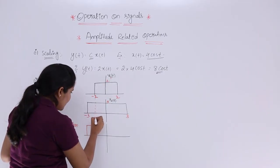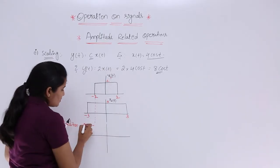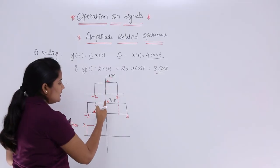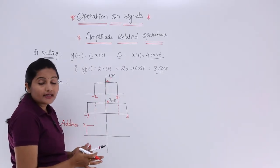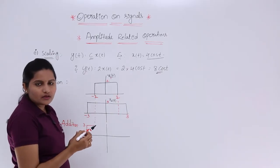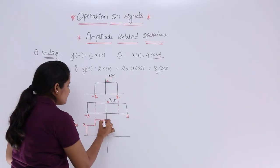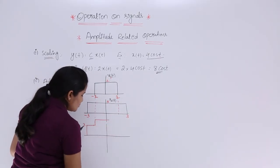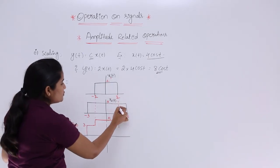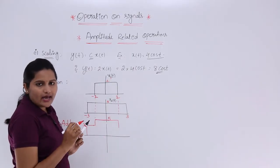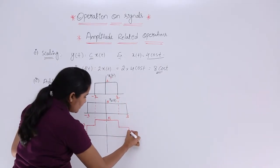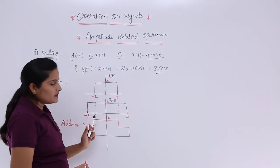From -3 to -2, the amplitude is 3 since only x2(t) is present. From -2 to +2, both signals overlap, so we add 3 + 2 = 5 — that is the maximum amplitude in the addition result. From +2 to 3, only x2(t) is present again with amplitude 3 + 0 = 3. This is the resultant signal from the addition of these two signals.